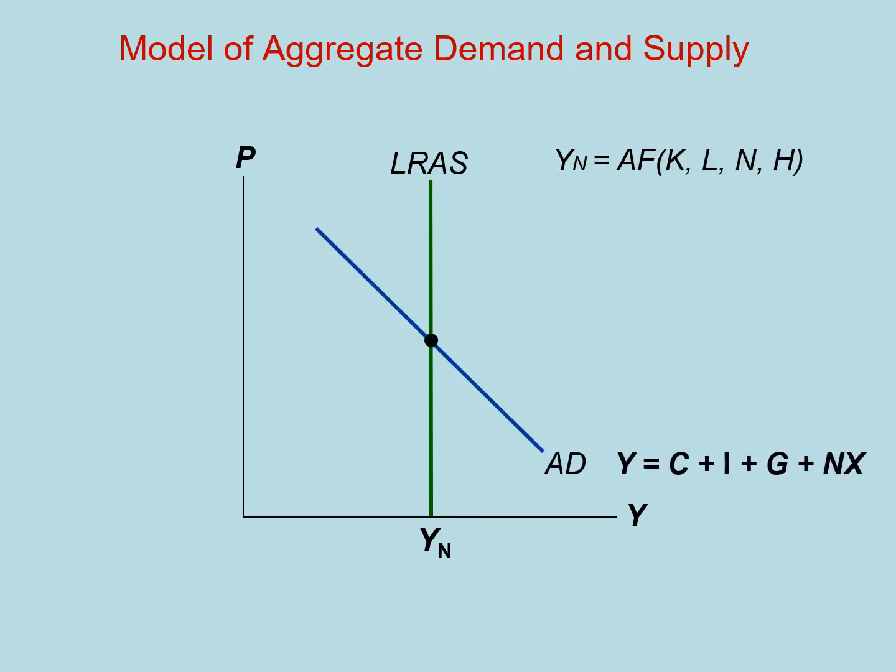Keynes' addition to our theory is the idea of aggregate demand. It formalizes the connection between output and its components and prices. As prices increase, short-run output, Y, decreases. We will represent short-run output from the perspective of aggregate demand using our GDP expression for the expenditures approach.